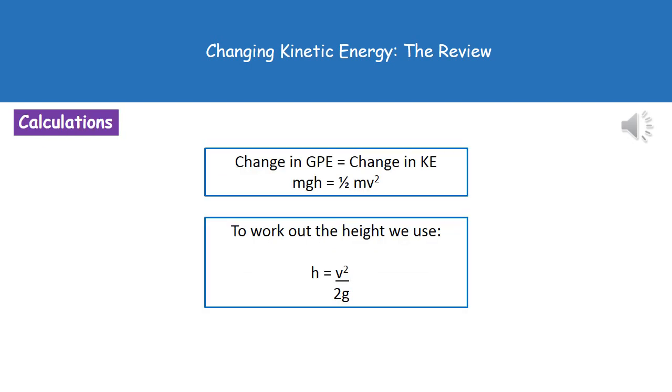Finally, we need to understand how gravitational potential energy and kinetic energy are related in terms of the equations. We can say mathematically that the change in gravitational potential energy equals the change in kinetic energy. So putting those two equations together, that tells us that our mass times the gravitational field strength times height, so mgh, equals half times the mass times the velocity squared. That gives us our summary equation you can see at the top there.